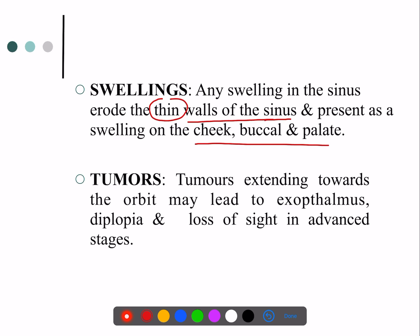Whenever there are tumors — as already discussed in the anatomy — the roof of the maxillary sinus is formed by the orbital wall. Whenever tumors related to the maxillary sinus lead to expansion of this roof, they may lead to exophthalmos or diplopia and some signs and symptoms related to sight and the eye.